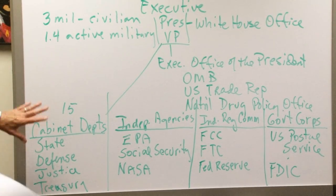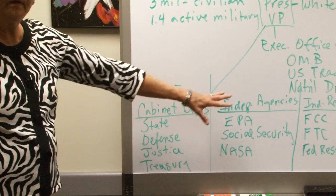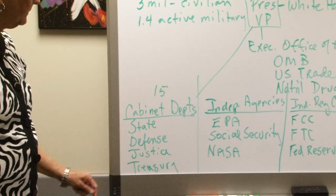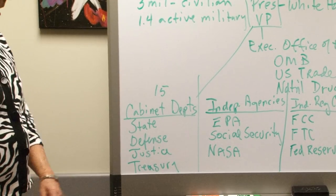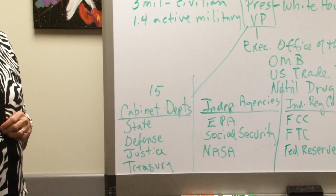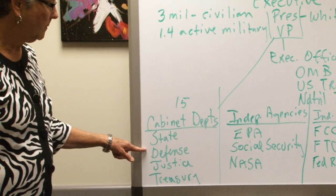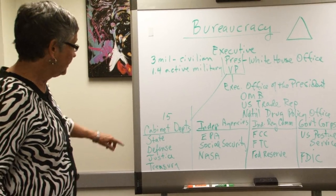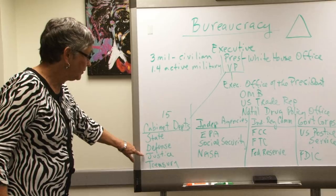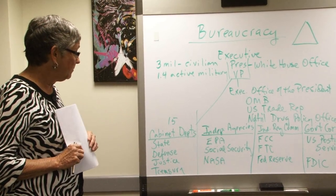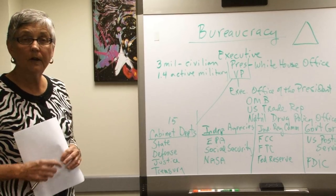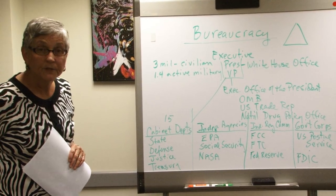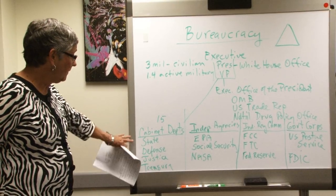This is where your three million people really reside and work every day. You can divide the federal bureaucracy into four groups. First, there are 15 cabinet departments. The oldest four are the Department of State, Department of Defense, Department of Justice, and Department of the Treasury. You should read your book carefully to see exactly what they do. There are 11 more — everything from Agriculture, Commerce, Labor, Energy, Education, Transportation, Health and Human Services, and Housing and Urban Development, among others.